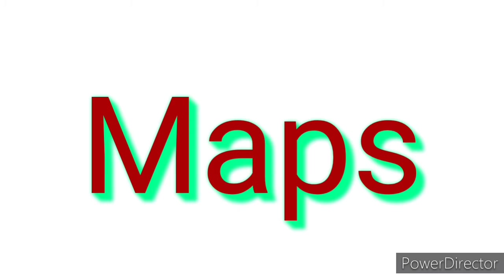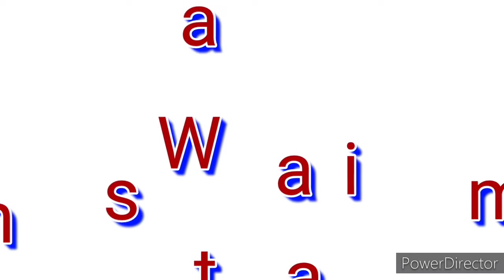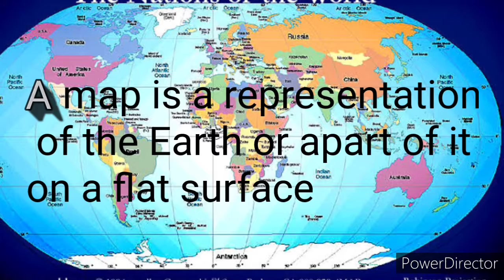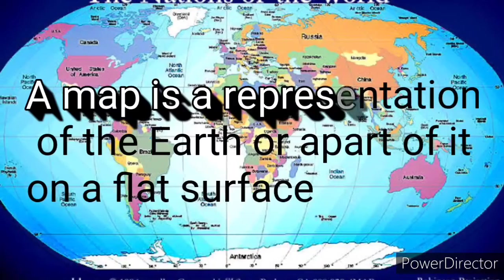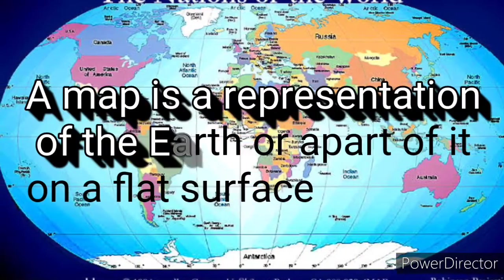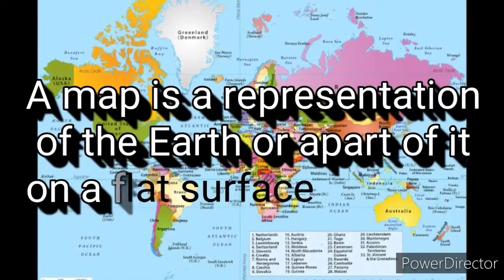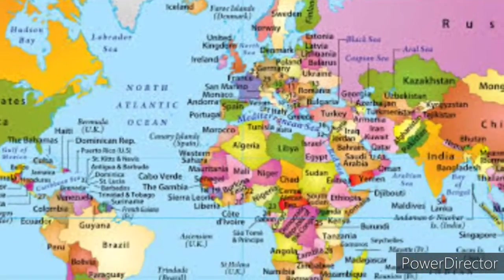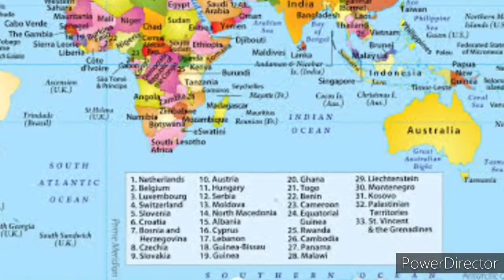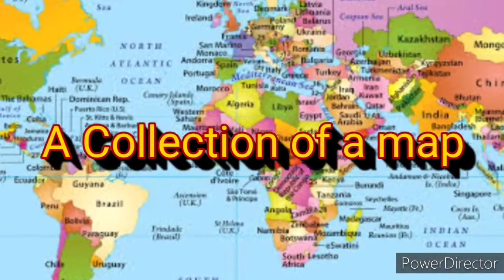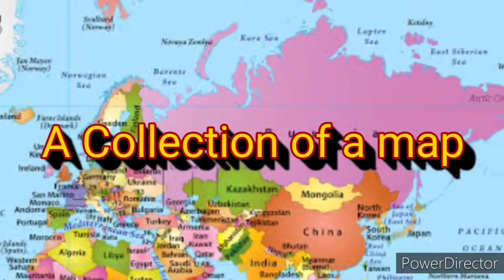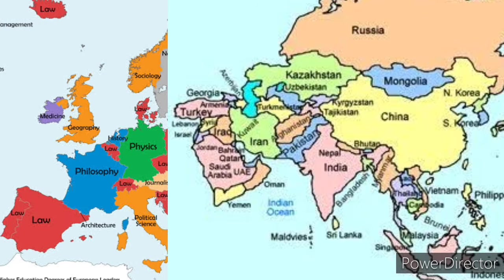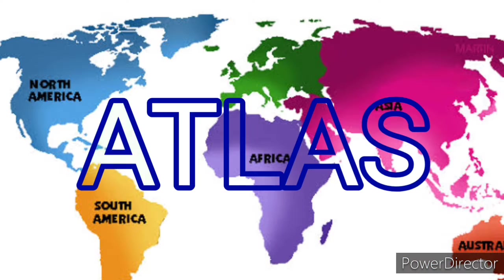Maps. What is a map? A map is a representation of the Earth or a part of it on a flat surface. It can represent a part of the Earth with more details. The whole Earth can be seen at a time. A collection of maps is called an atlas.